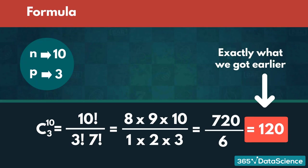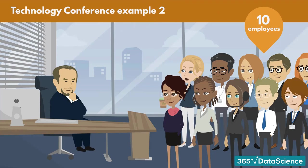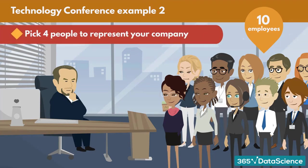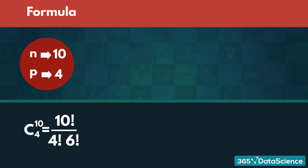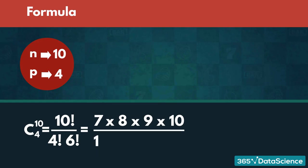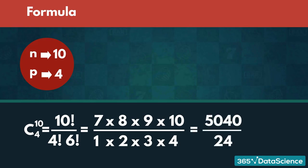Exactly what we got earlier. Let's go through another example: what if we had to choose 4 out of 10 people to go to the conference? According to the formula, we are going to have 10! / (4! × 6!) combinations. After some simplifications, this would equal (7 × 8 × 9 × 10) / (1 × 2 × 3 × 4) = 5040 / 24, which is 210.